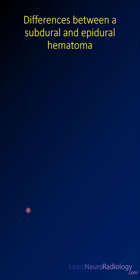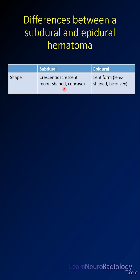Let's take one quick minute to learn the key differences between the imaging appearance of a subdural and an epidural hematoma. A subdural hematoma tends to be more crescentic, shaped like a partial moon, whereas an epidural hematoma is more shaped like a lens, so the outer margins bulge outward.